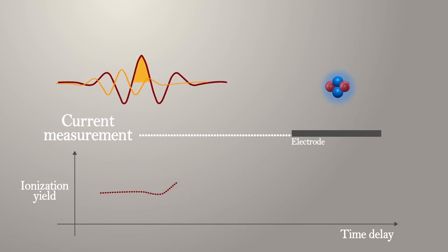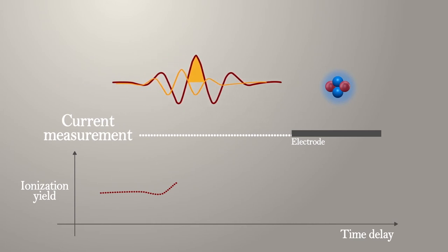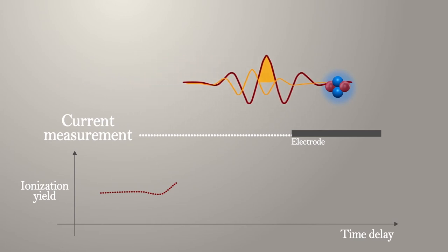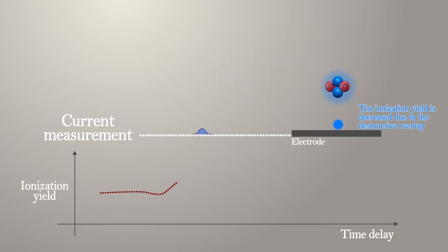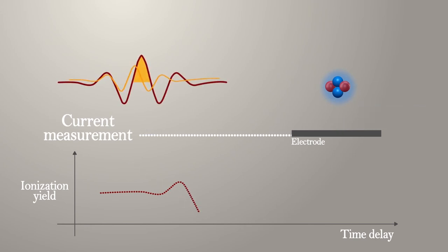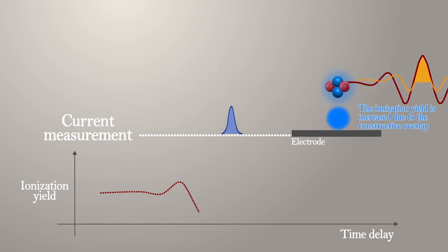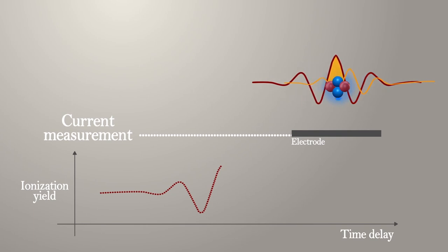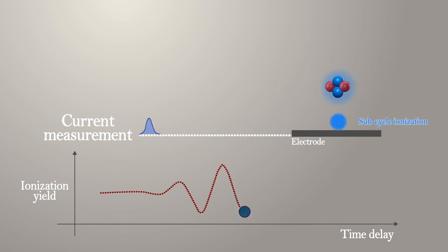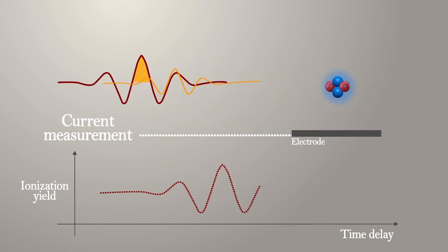Now we change the time delay between the two pulses and repeat. We repeat measurements until the strong laser pulse fully sweeps the weak pulse. The resulting modulation of ionization yield represents the shape of the weak laser pulse.